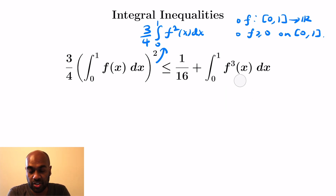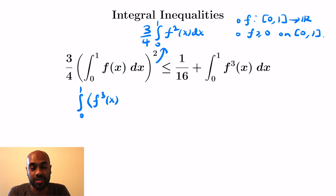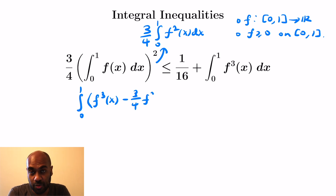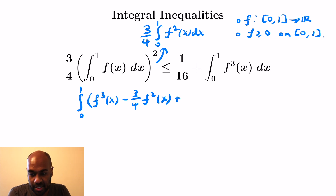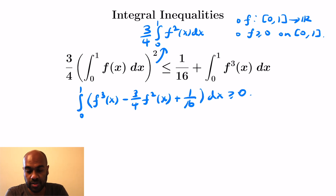That's in terms of the function itself instead of the square of the integral, which is hard to manipulate. So if we instead prove that the right-hand side is greater than or equal to three-quarters times the integral from 0 to 1 of f squared, then we're good. We can move that quantity to the right-hand side and put everything into one integral. The goal then would be to establish that the integral from 0 to 1 of f cubed of x minus three-quarters f squared of x plus one-sixteenth is greater than or equal to 0.